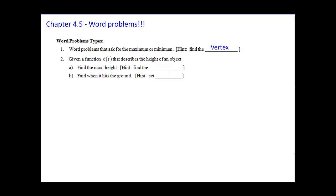So if we want to find the max height, hint: find the vertex. And then when it hits the ground, we're going to set equal to zero, meaning the height is basically zero once it touches the ground.